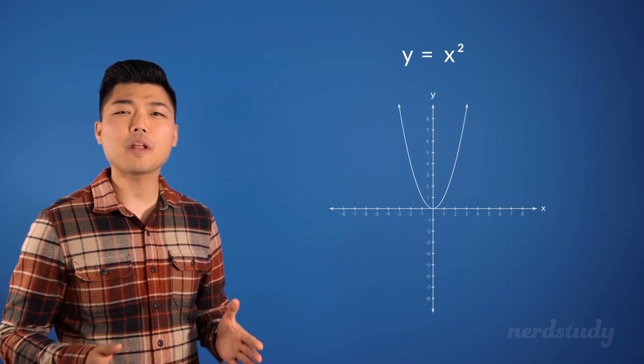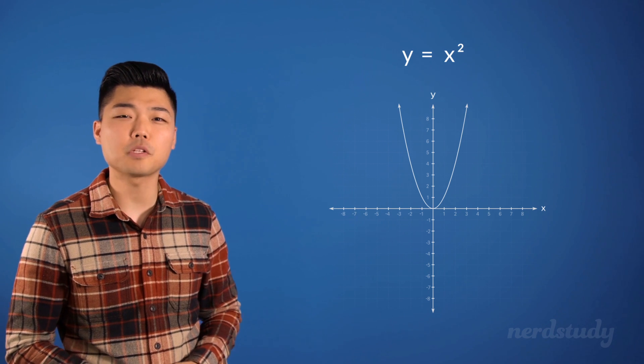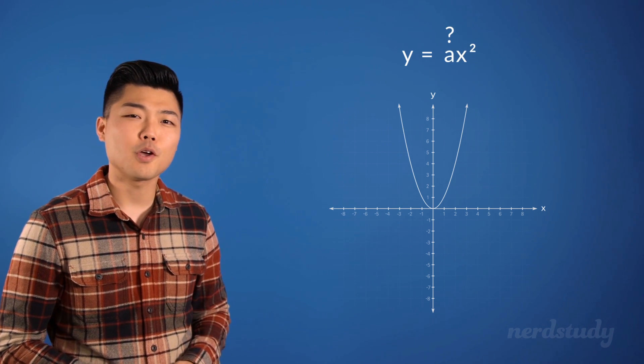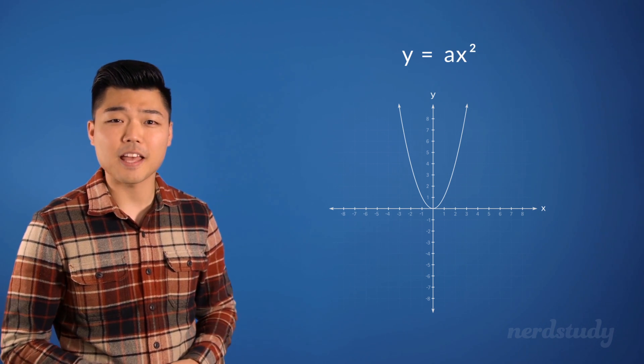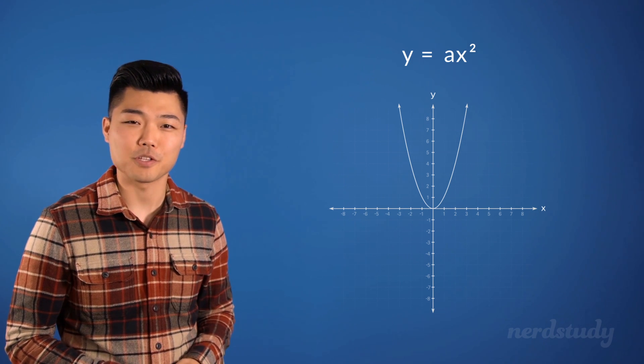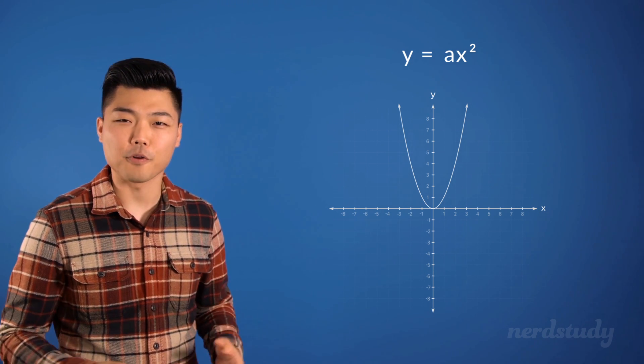But what would happen if x squared was being multiplied by a number? Well, the answer is that it really depends on the situation. So, let's go ahead and explore them.